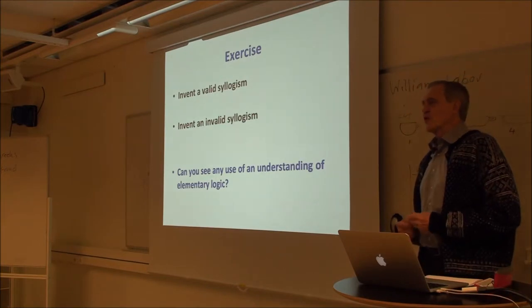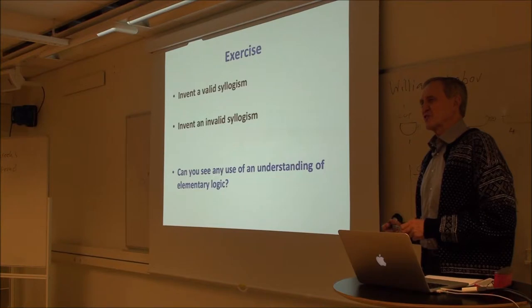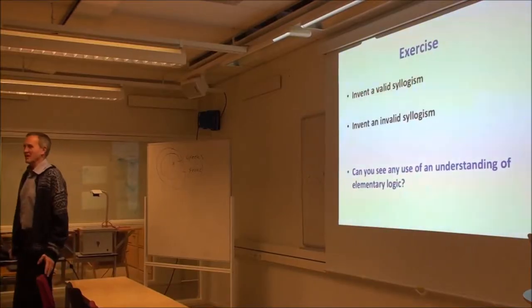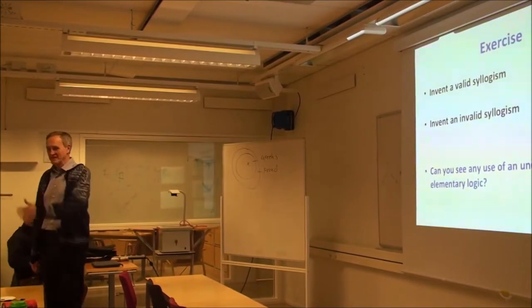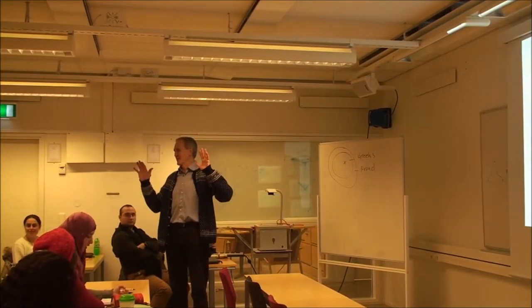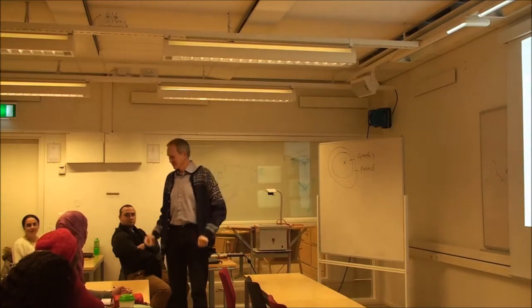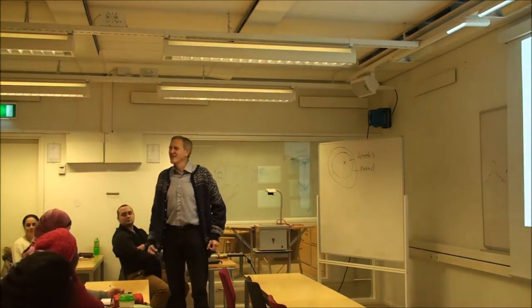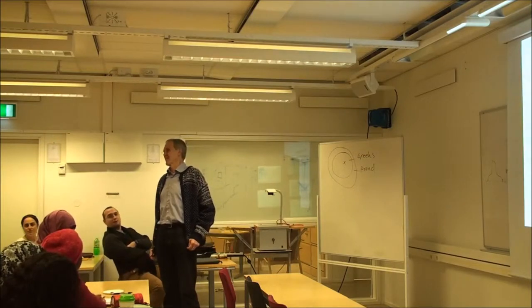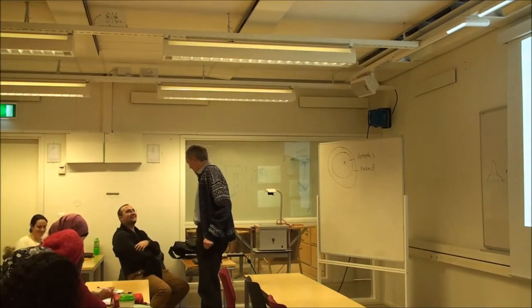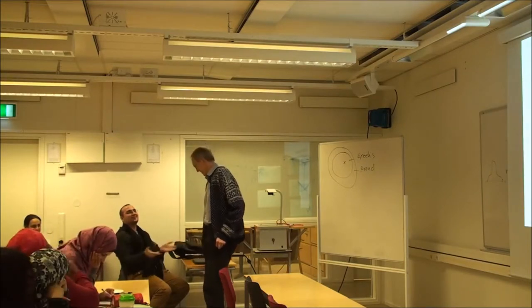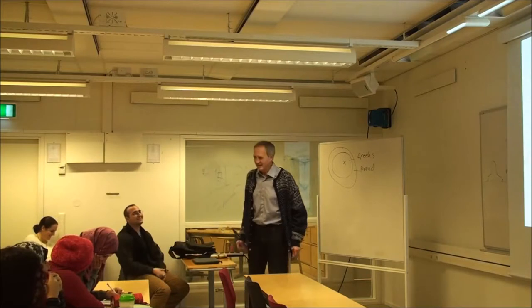Now I want you to talk to your neighbor and invent two syllogisms — one valid and one invalid. A student offers a valid one: all human beings are mortal; James is a human; therefore James is mortal — unless you're a Highlander. Another student offers an invalid one: all Chinese love green tea — Anne is Chinese — then Anne loves green tea. But wait — does every Chinese person love green tea? Maybe not. In logic, if it is true that all Chinese love green tea and it is true that Anne is Chinese, then Anne loves green tea. Logic only guarantees the truth carried in the premises.